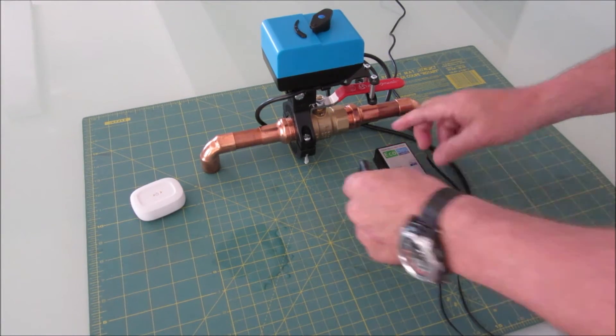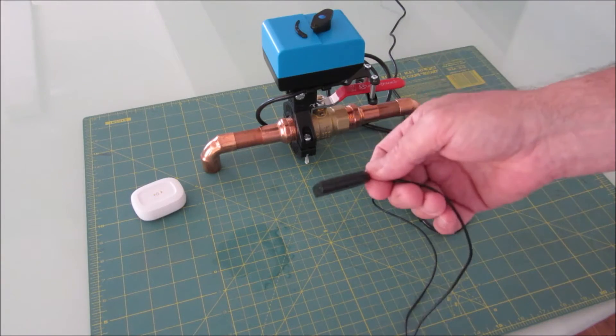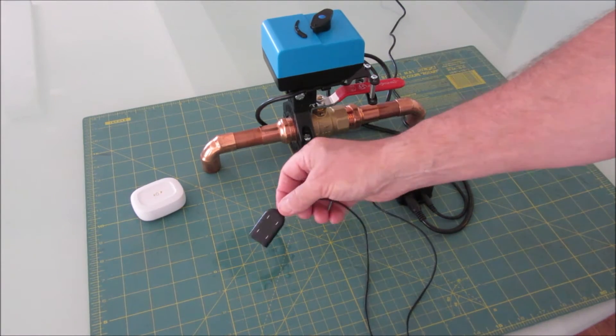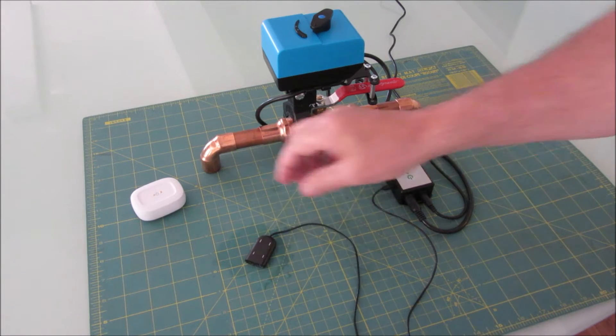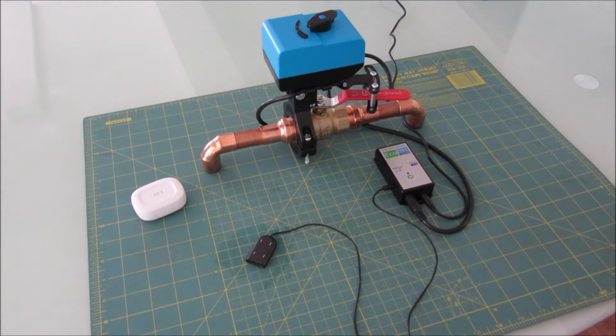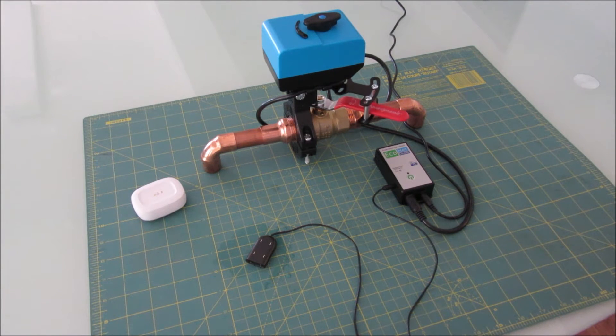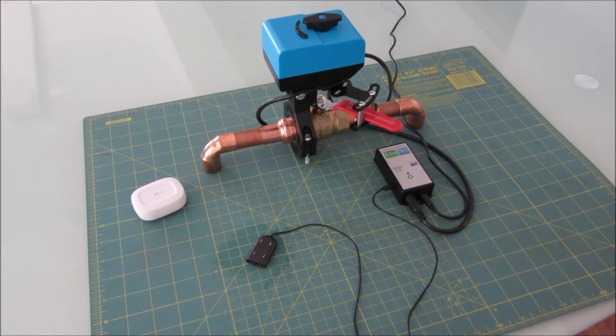And when this gets wet, it'll shut off the valve. So let's just do that here. All right, so it's shutting off the valve, and your smart home system will know it shut off the valve because the status will change.